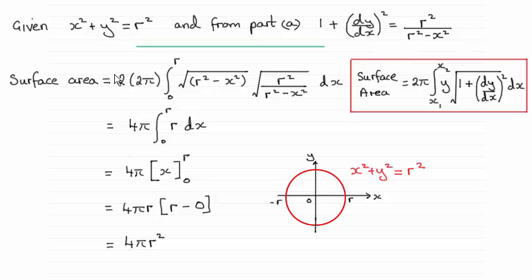So you can see I've done 2 times 2π, the integral from 0 to r of y, which is going to be the root of r² minus x² from here. And then we've got the result that we found in part a for 1 plus (dy/dx)².